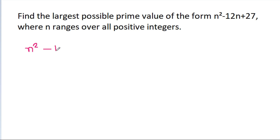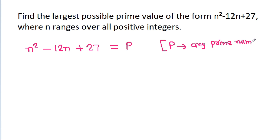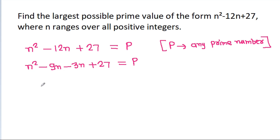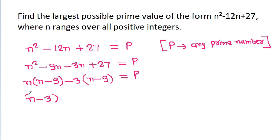We have n squared minus 12n plus 27, which is a prime number p. We rewrite the expression as n squared minus 12n, splitting it as minus 9n minus 3n plus 27, equal to p. This factors as n times (n minus 9) minus 3 times (n minus 9), giving us (n minus 3)(n minus 9) equals p.